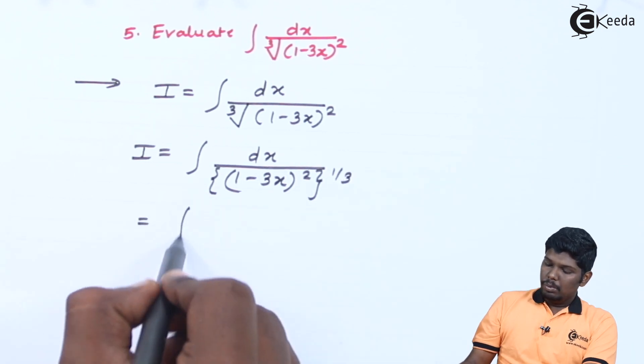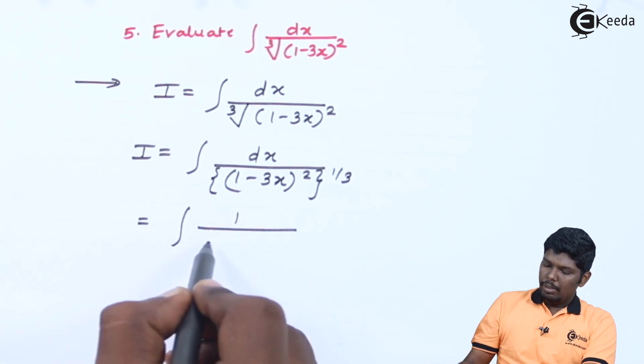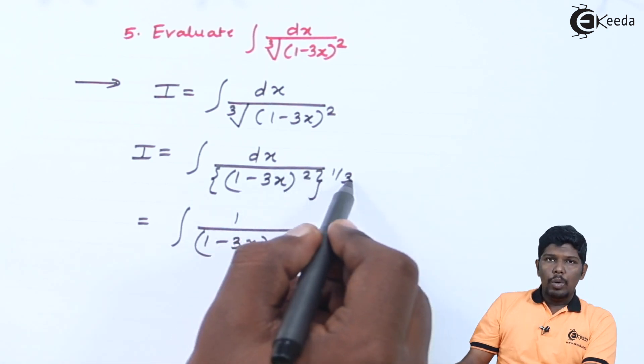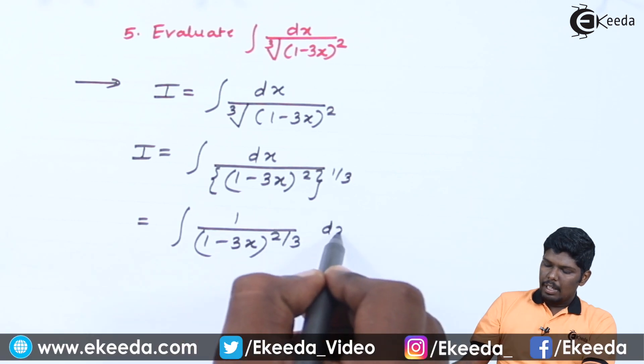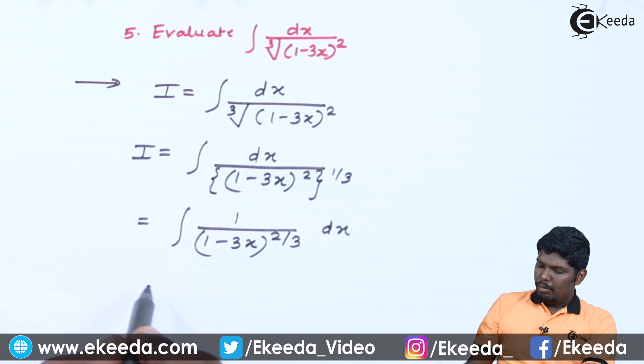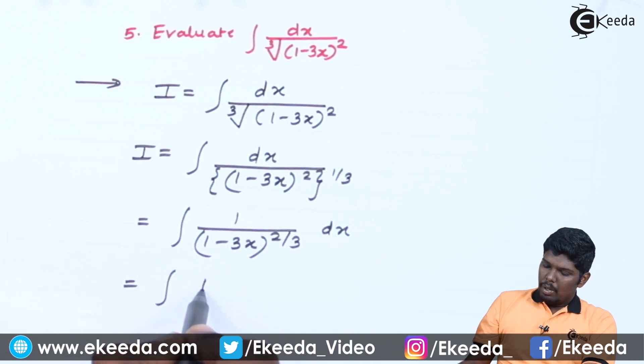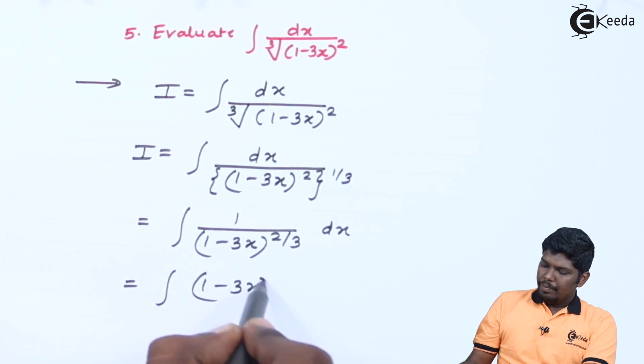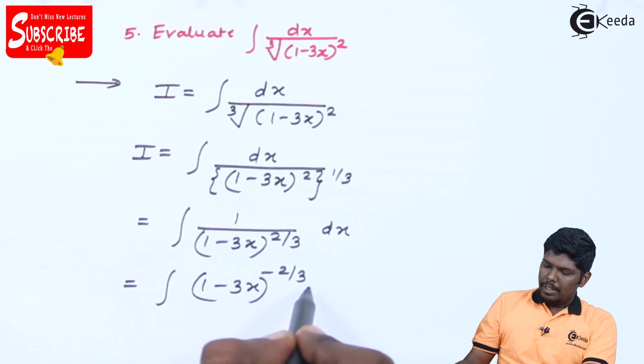That will give you 1 upon (1 minus 3x), 2 into 1 by 3 will give you 2 by 3, dx. Taking this entire part in the numerator, we will get (1 minus 3x) the whole raise to minus 2 by 3 dx.